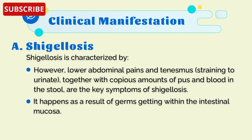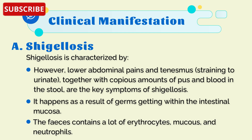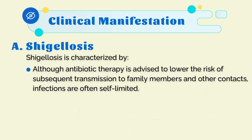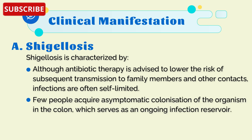Lower abdominal pain and tenesmus, together with copious amounts of pus and blood in the stool, are the key symptoms of shigellosis. It occurs as a result of bacteria penetrating the intestinal mucosa. The feces contain erythrocytes, mucus, and neutrophils. Although antibiotic therapy is advised to lower the risk of subsequent transmission, infections are often self-limited. Few people acquire asymptomatic colonization of the organism in the colon, which serves as an ongoing infection reservoir.